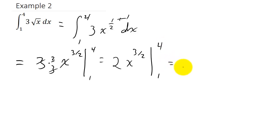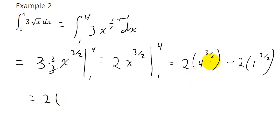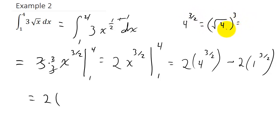Plugging in, we get 2 times 4 to the 3/2 minus 2 times 1 to the 3/2. To compute 4 to the 3/2, we convert to radical form: that's the square root of 4 raised to the third. The square root of 4 is 2, and 2 raised to the third equals 8.